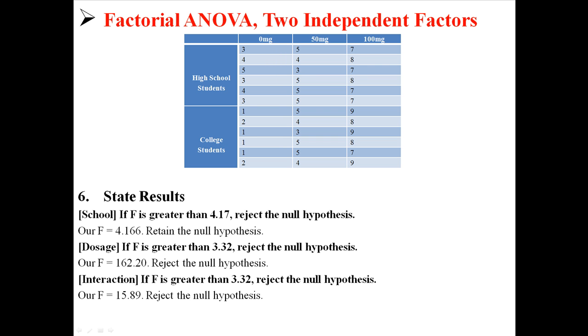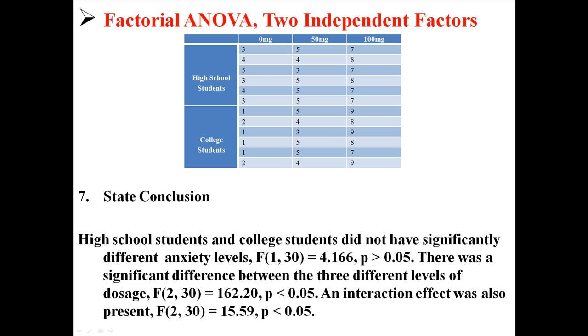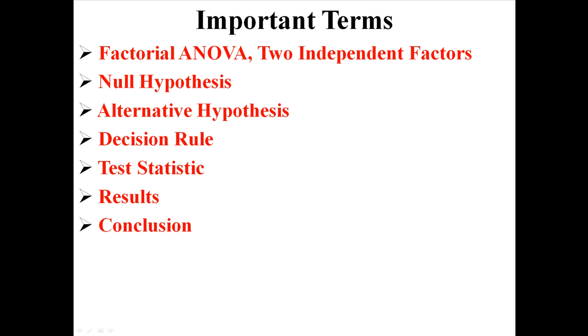We can finally state our results. We're going to compare those Fs to our critical values. For school, we're going to retain the null hypothesis because it's not greater than 4.17. But for dosage and the interaction, we're going to reject the null hypothesis because both of those Fs are greater than 3.32. So what does that actually mean? What is our conclusion? We can conclude that high school students and college students did not have significantly different anxiety levels. There was a significant difference between the three different levels of dosage. An interaction effect was also present. That is a factorial ANOVA with two independent factors.